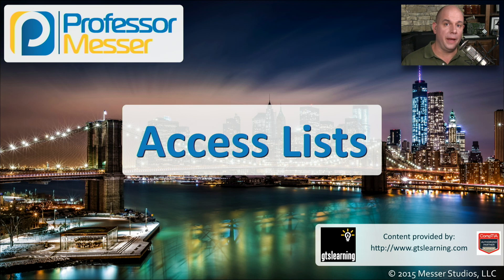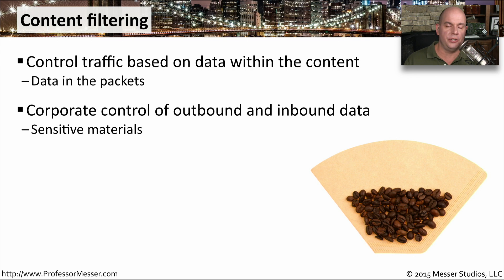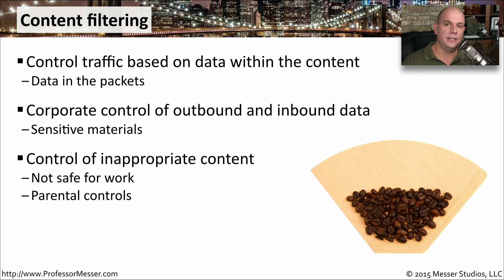There are many different ways to filter information as it's passing through the network. If you want to keep your network secure, you're going to want to take advantage of access lists. A content filter includes a set of access lists that determines whether information is allowed or blocked, usually making this determination based on what is inside of the packets themselves. In large organizations, content filters are commonly used to allow or disallow information going from the inside to the outside or vice versa, perhaps preventing sensitive materials from being transferred out. Or you might use content filters at home to prevent inappropriate information from being shown in a browser — very useful for parental controls.